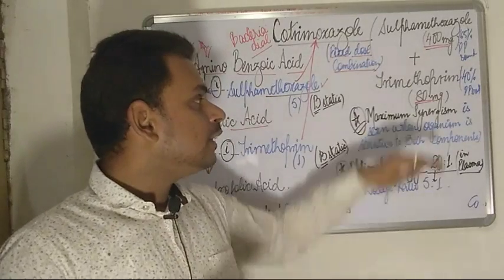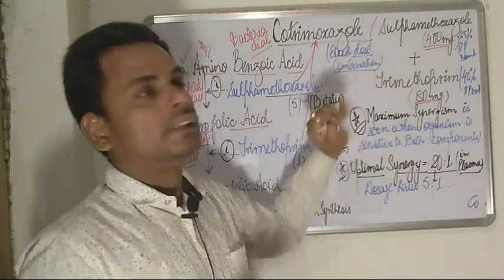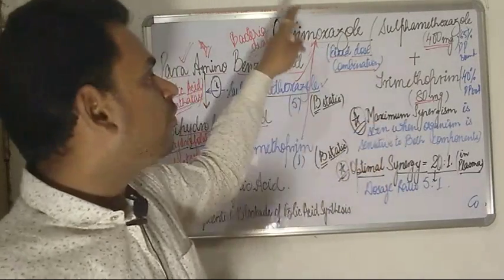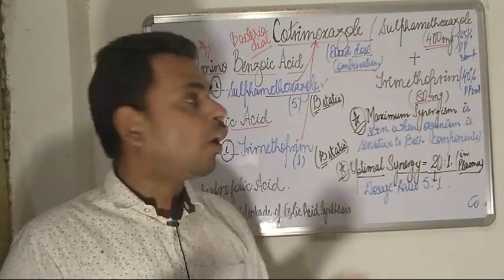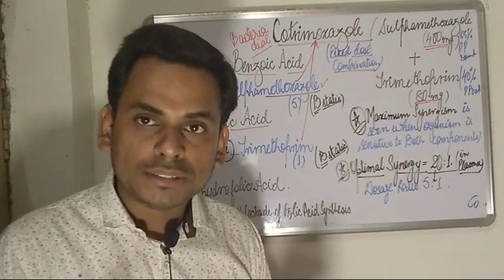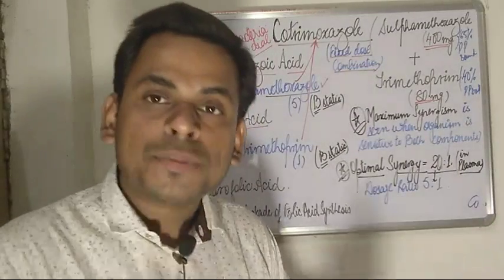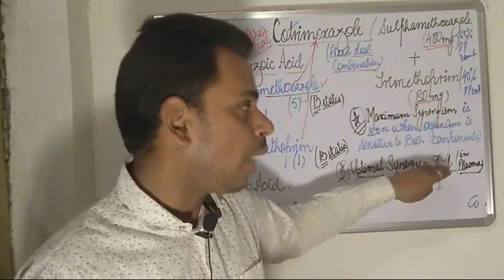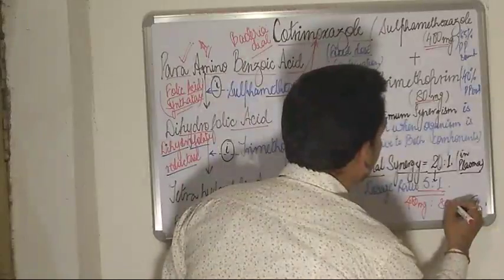Maximum synergism of this combination is obtained when the organisms are sensitive to both drugs. The optimal synergy of this two-drug combination is seen when a plasma concentration ratio of 20 to 1 is achieved. To obtain this plasma concentration of 20 to 1, the dosage ratio administered to the patient should be 5 to 1 — that is, 400 milligram of sulfamethoxazole to 80 milligram of trimethoprim.